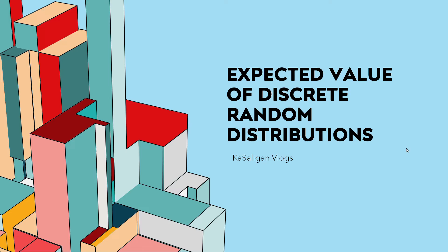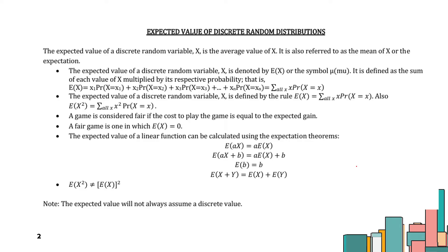Hello everyone, welcome back to my YouTube channel. This is Casaligan Vlogs and today we'll be talking about the expected value of discrete random distribution. The expected value of discrete random distribution is the average value of X. It is also referred to as the mean of X, or the expectation.